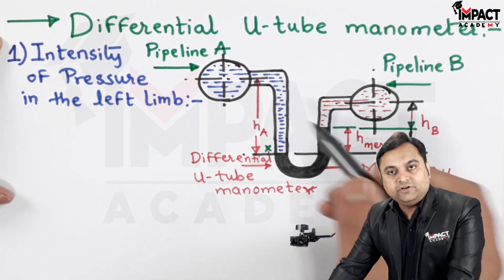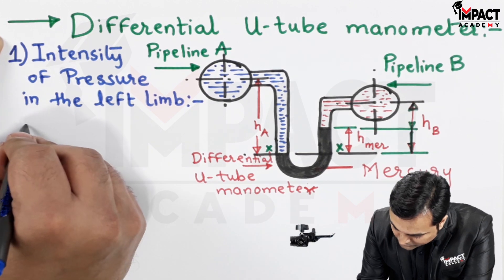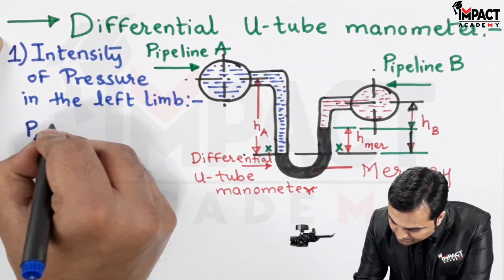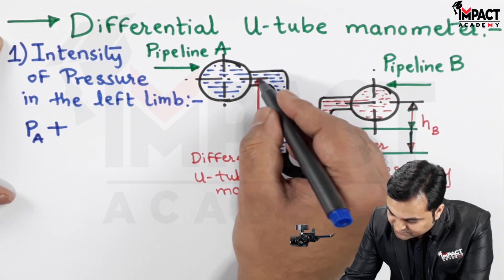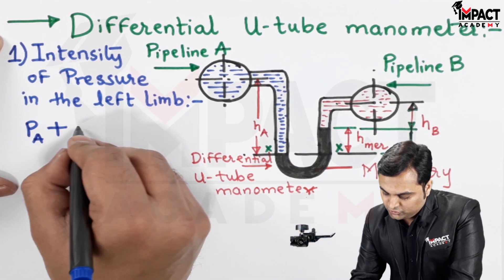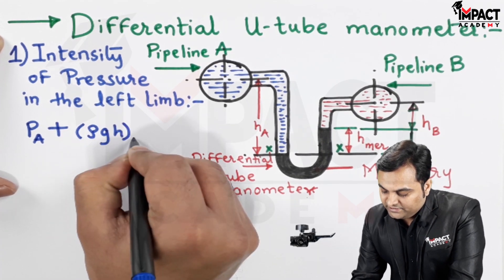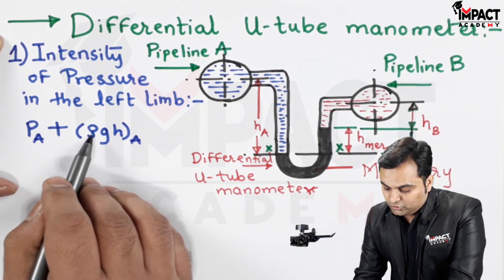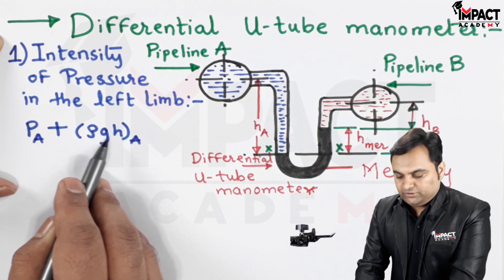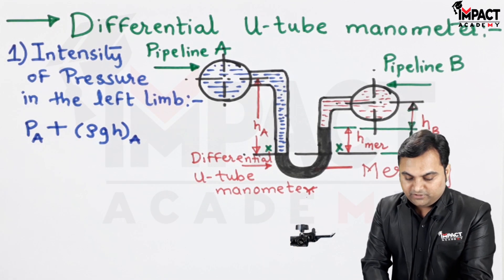The intensity of pressure in the left limb above section XX: there is pipeline A, so the pressure exerted by fluid A is PA, plus the pressure from the liquid column which is ρA × g × HA, where ρA is the density of liquid A, g is 9.81 m/s², and HA is the height of the liquid column. This becomes equation number one.